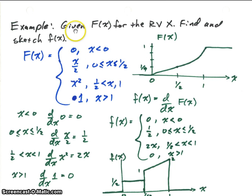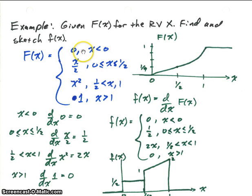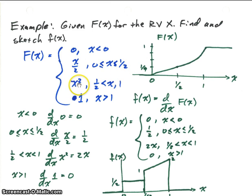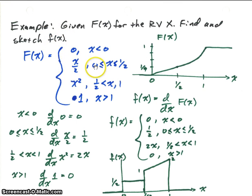Let's do another example. We're given the distribution function and we're going to find the density function. We'll sketch the distribution function first, then find and sketch the density function. The distribution function has four sections: 0 for x less than 0; x/2 between 0 and 1/2; x² from 1/2 to 1; and 1 from then on. To find the density function we just take the derivative of the distribution function for each section.